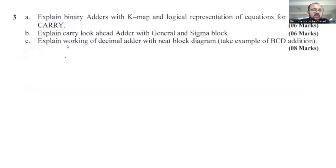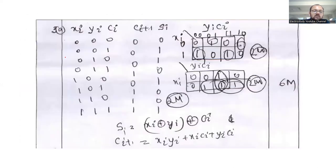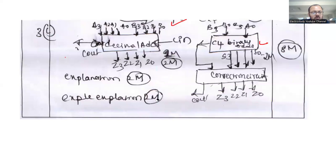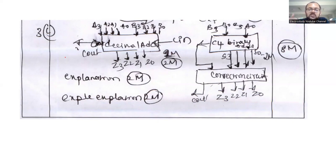Question number 3c: explain the working of a decimal adder (BCD adder) with a neat block diagram, taking the example of BCD addition. Show the general block diagram of the binary adder with a brief explanation. Each part carries two marks — four marks total. Refer your notebook if you have a better solution. You can take a screenshot of this video for future reference.